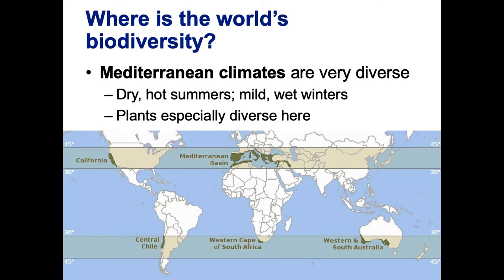Another type of ecosystem with a lot of diversity is areas with Mediterranean climates. We think of the Mediterranean basin, but places all over the world have these climates: California, central Chile, the western cape of South Africa, and western and southern Australia. What makes a Mediterranean climate is dry, hot summers and mild, wet winters. We find tons of plant species in these different Mediterranean climate regions.